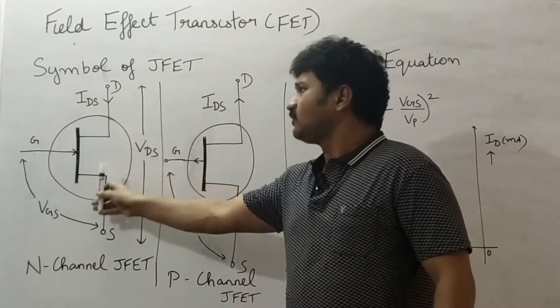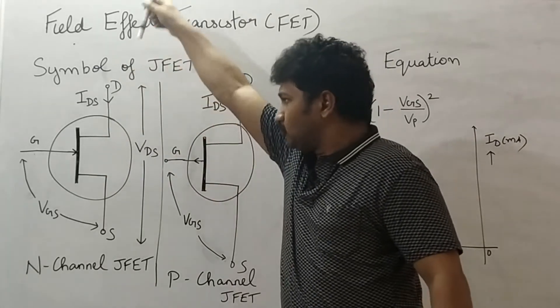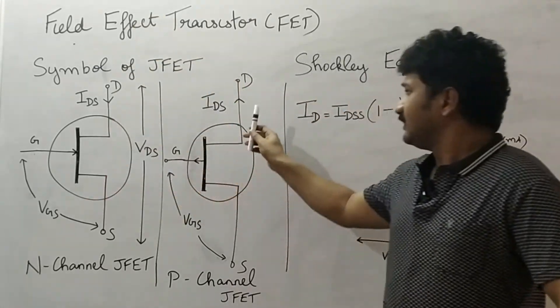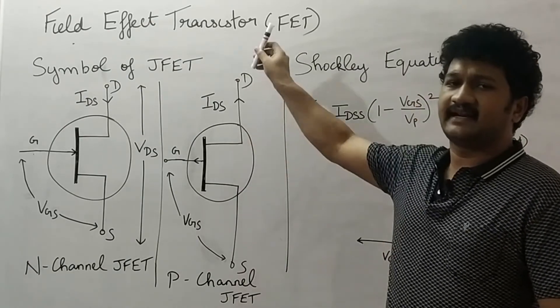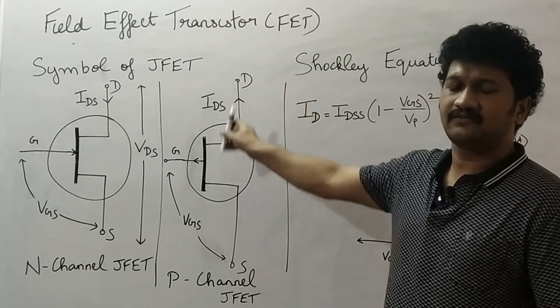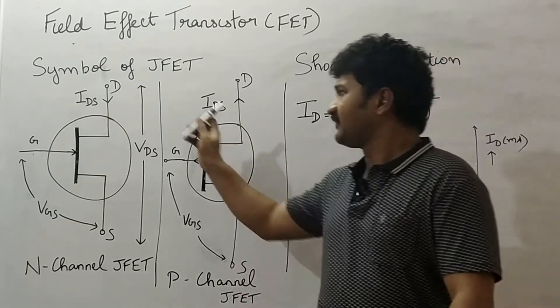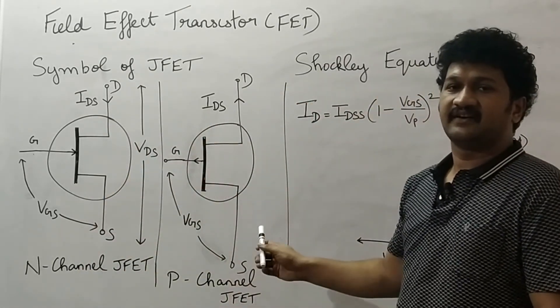Here, electrons move upwards, so drain to source current moves downwards. Here, holes move upwards and drain to source current also moves in the same direction as the holes. This is the difference between N channel JFET and P channel JFET.